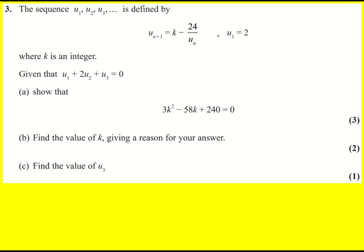A sequence is defined using this recurrence relation and the fact that u1 is equal to 2, where k is an integer. Then we're given a relationship between u1, u2 and u3, and that's to show this quadratic is true.